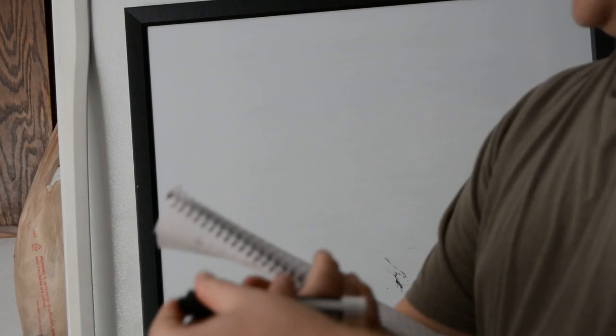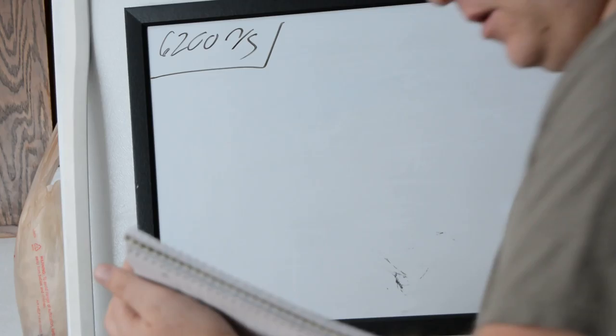So now we have problem 13.20, which gives all the information. It tells us at the start that we have a satellite in circular orbit with an orbital speed of 6200 meters per second.